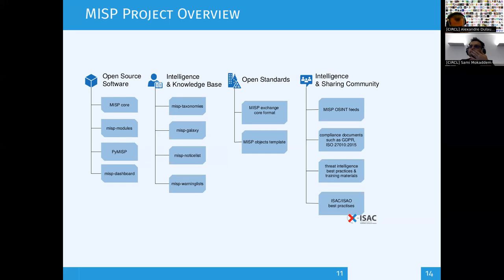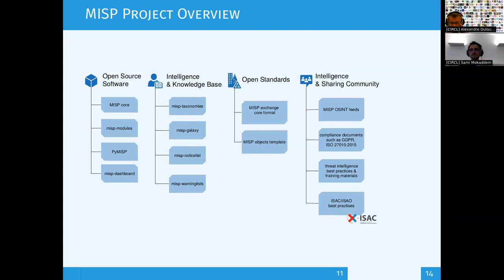Many modules are available for expansion, linked to known services or expansion services. You can write your own modules, for example in 40 or 50 lines of Python code — it's a nice way to extend MISP. Then you have PyMISP, the most actively used library for interacting between MISP and other systems.